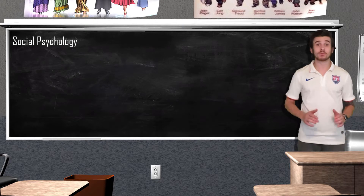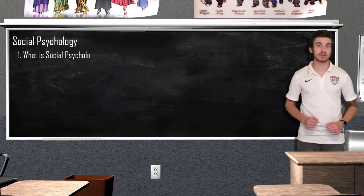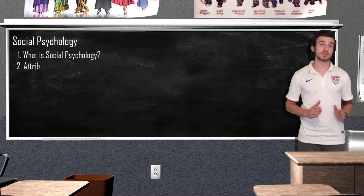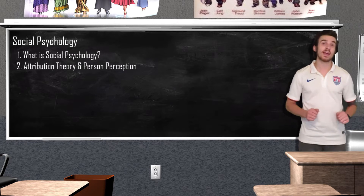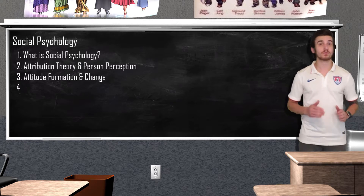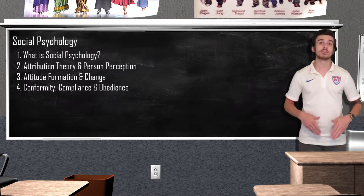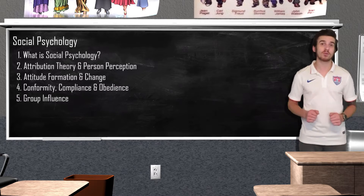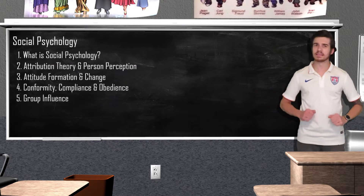Once you have all the information down from this unit, your review guide will be complete. For this review video, we are going to start off by explaining what exactly social psychology is. Then we're going to move on to attribution theories and person perception, how our attitudes form and change, conformity, compliance, and obedience. And we're going to end with how the group influences our behavior and mental processes. Let's get started.